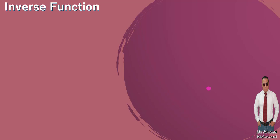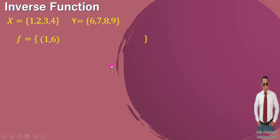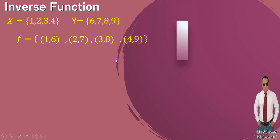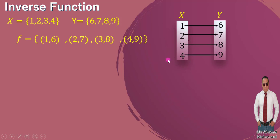Let's take an example to understand the concept of the inverse function. For example, if we have set X and set Y, and the function F includes elements: (1,6), (2,7), (3,8), (4,9) — where the first element is from X and the second from Y. This function represented with an arrow diagram connects X to Y. This function is one-to-one.